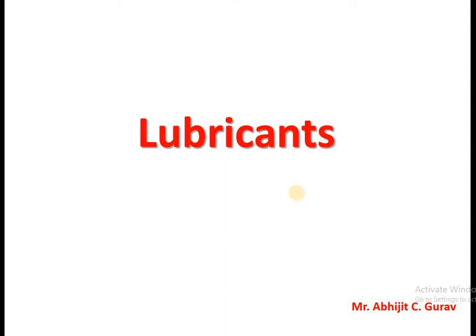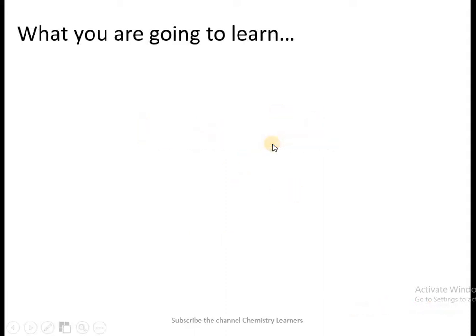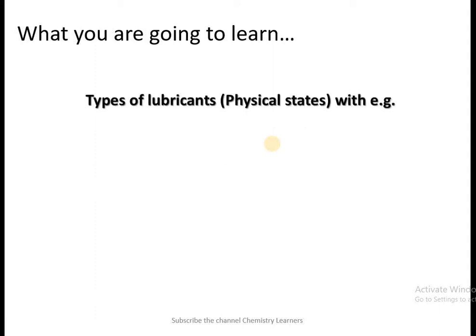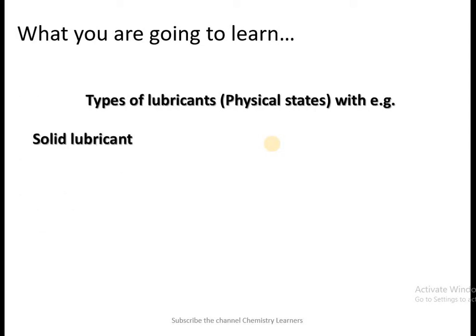There are different types of lubricants. In this lecture, we are going to learn about the types of lubricants depending on their physical state. We have solid lubricant, semi-solid lubricant, and liquid lubricant. Let us see one by one.